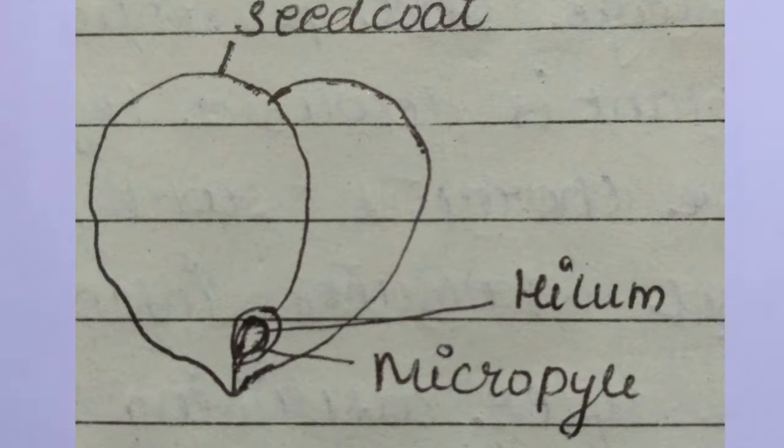Within the seed coat is the embryo consisting of embryonal axis and two cotyledons. The cotyledons are fleshy and full of reserved food. At the two ends of embryonal axis, radicle and plumule are present.